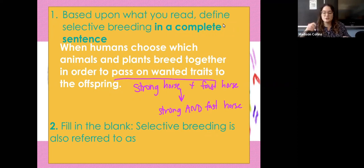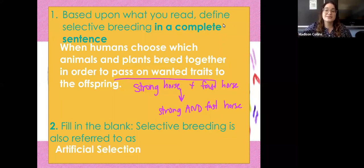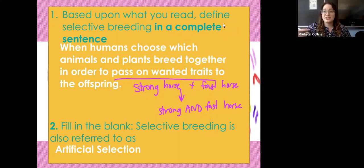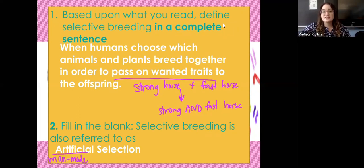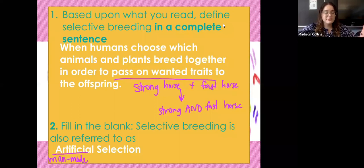With selective breeding we're trying to pass on the best possible traits. Number two: selective breeding is also referred to as artificial selection. This is basically the opposite of natural selection. With natural selection, things happen according to nature on their own. But with artificial selection, humans are getting involved and forcing things to happen that wouldn't naturally occur. Artificial selection is definitely human intervention, which can be good, but can also have some pretty detrimental effects that we'll talk about in just a second.